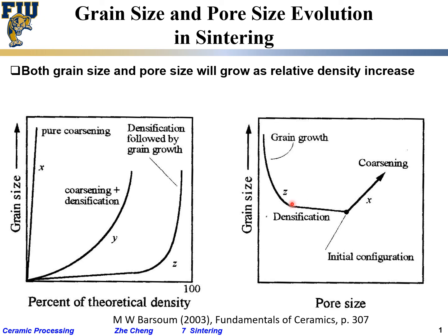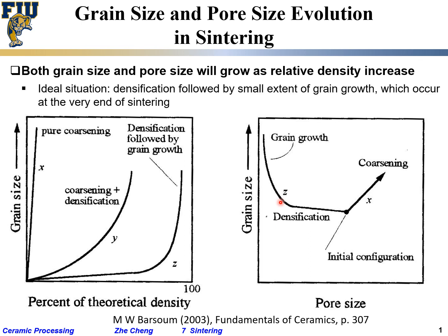Towards the very end it is still very difficult to limit grain growth. But in a well-executed sintering process, it often follows a Z-curve: increasing grain size while eliminating most or all of the porosity — targeting relative densities of 98 to 99 percent. The ideal situation is densification followed by only a small grain growth occurring at the very end of sintering.